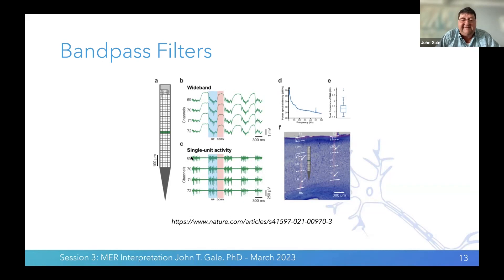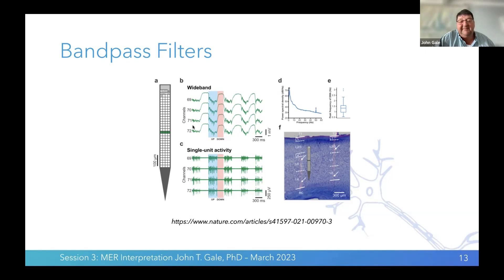Looking at two traces: with highly activated filters, slow activity is flattened down — we've gotten rid of slow activities because we want to see the sharp spiking inflections. When looking at local field potentials, there may be important information in the slow riding activity, so we move the filter to allow in more slower frequencies and diminish the higher-frequency spiking activities. By filtering differently, we can look at different types of information in the brain.